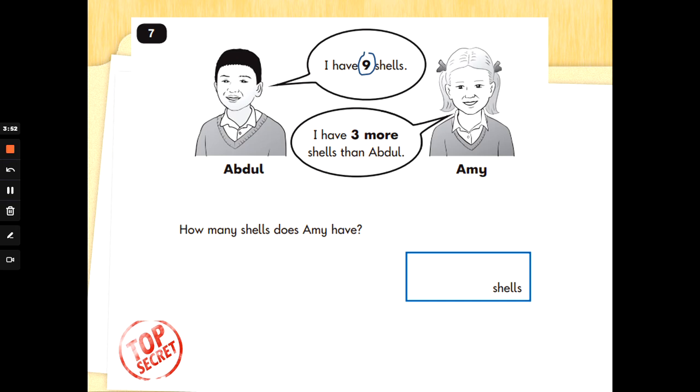Number 7. Abdul. I have 9 shells. Abdul has 9 shells. Amy. I have 3 more shells than Abdul. How many shells does Amy have? So Amy has 9 and 3 more. Is that adding 3 or taking away 3? That's right. We need to do 9 add 3 to get the answer to how many shells Amy has.